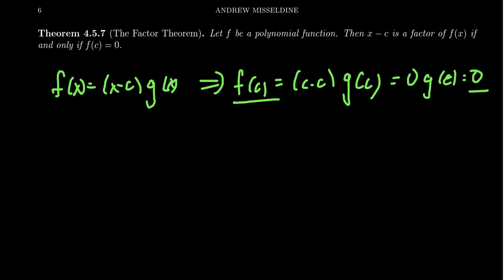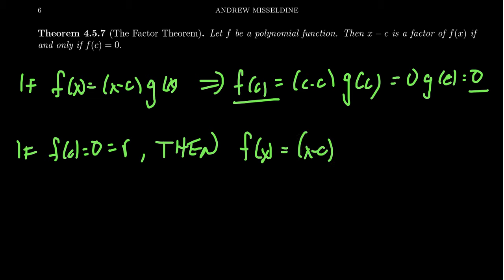Now what if we go the other way around? What if, for example, f of c equals 0? Well by the remainder theorem, this is the remainder if you divide by x minus c. So that would imply that when you take f of x and divide it by x minus c, there's some quotient we call g of x, and there's some remainder r. But as that's 0 in this situation, you get x minus c times g of x. So the x minus c is the divisor right there.